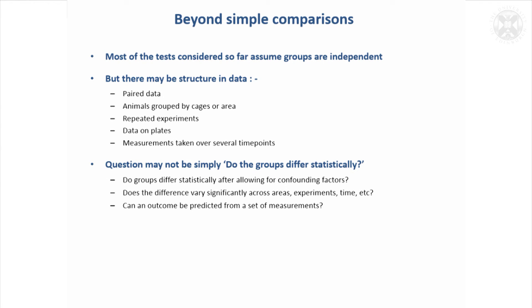Sometimes you're in a situation where you're not just asking do the groups differ significantly. It might be whether they differ significantly after allowing for confounding factors. It might be do they differ significantly across different areas or within different areas, experiments across different time points. So it's not quite as straightforward as just doing simple comparisons. Or you might, as we saw on one of the slides, want to actually do a prediction from a set of measurements, not just to prove a hypothesis.